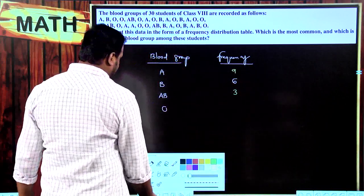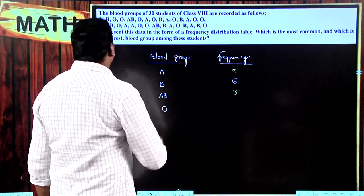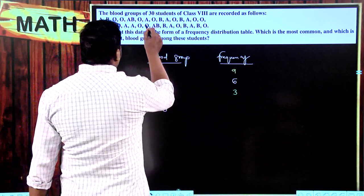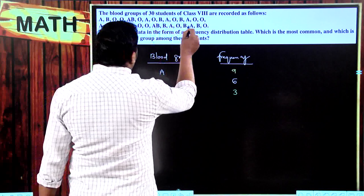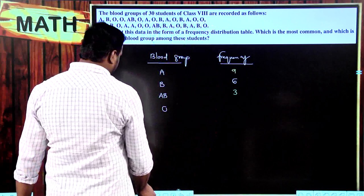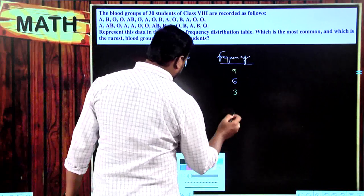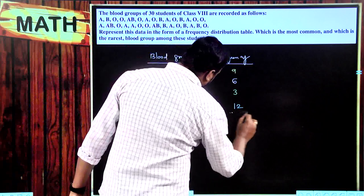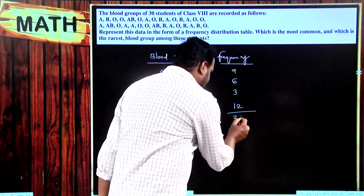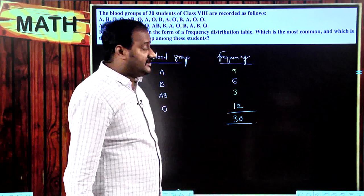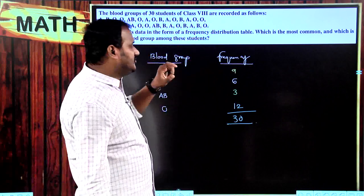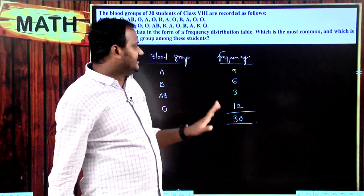For blood group O, there are 12 students. Adding all: 9 plus 6 plus 3 plus 12 equals 30, which matches our total. Please be very careful when counting the number of each blood group — that is the key thing you need to focus on.